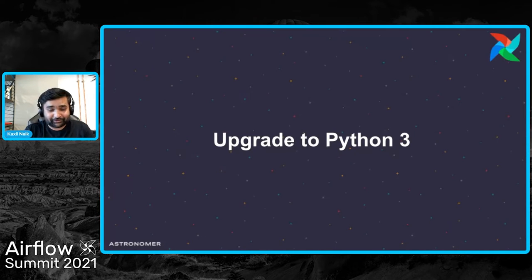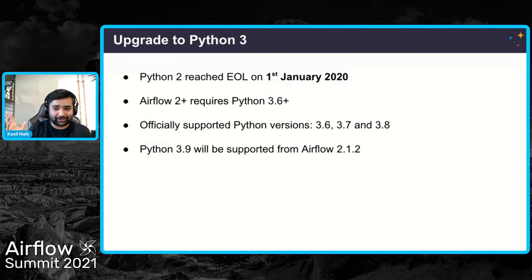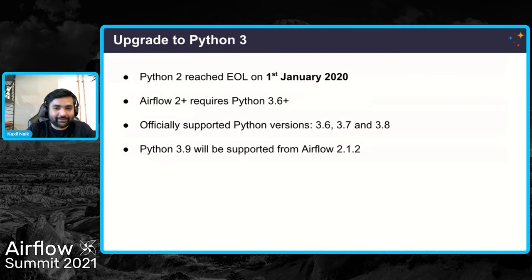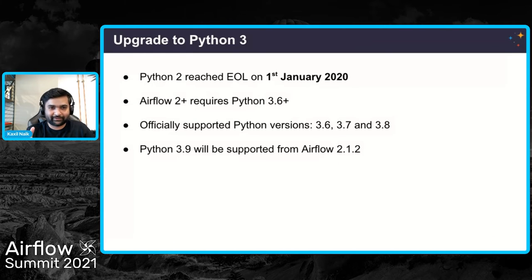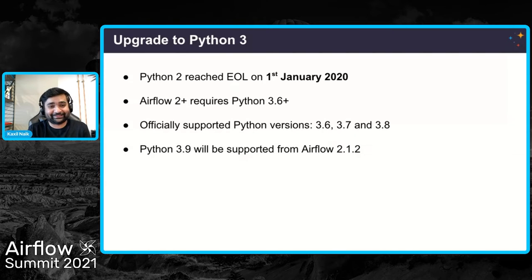First and foremost, please upgrade to Python 3.0 if you haven't already. Python 2.0 has reached end of its life 18 months ago. We have dropped support for Python 2.0 from Airflow 2.0 and above. We only officially support Python 3.6, 3.7 and 3.8. We will be releasing Airflow 2.1.2 tomorrow, which will also add official support for Python 3.9, meaning we run all the tests in CI with those Python versions. If you are on Python 2, please upgrade to Python 3 right now.